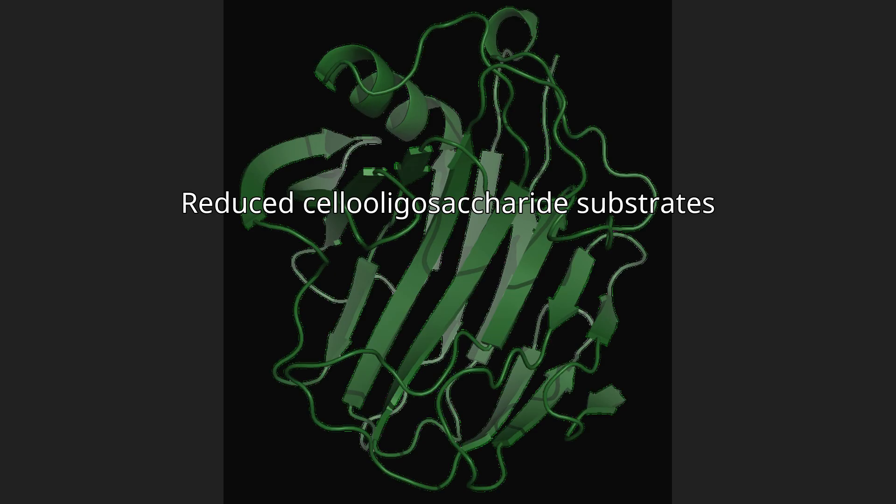Reduced cello-oligosaccharide substrates: cellooligosaccharides can be chemically reduced through the action of sodium borohydride to produce their corresponding sugar alcohols. These compounds do not react in reducing sugar assays but their hydrolysis products do. This makes borohydride-reduced cello-oligosaccharides valuable substrates for the assay of cellulase using traditional reducing sugar assays such as the Nelson-Somogyi method.